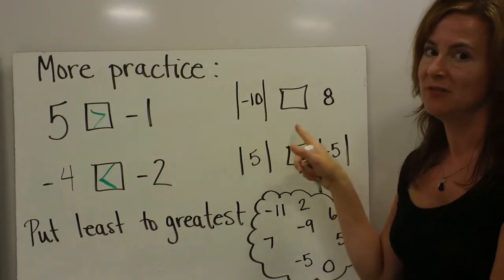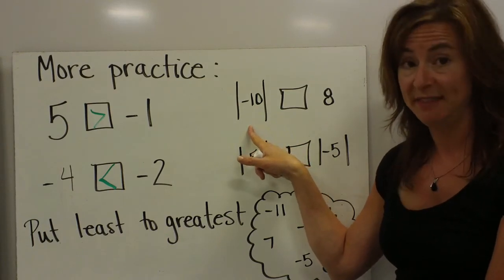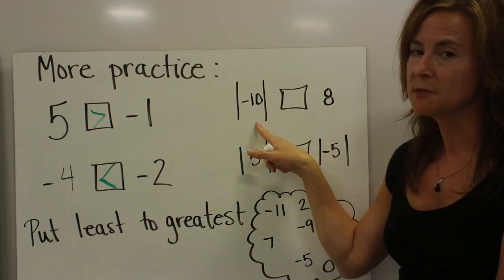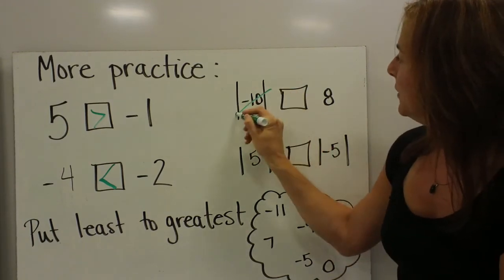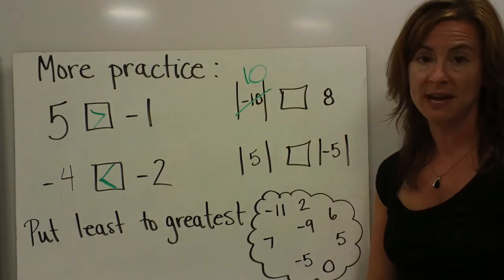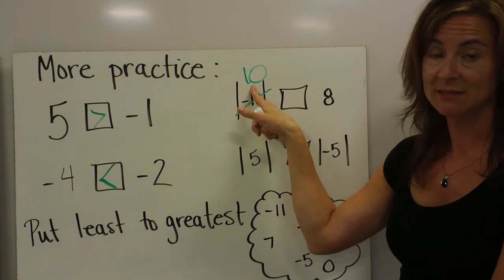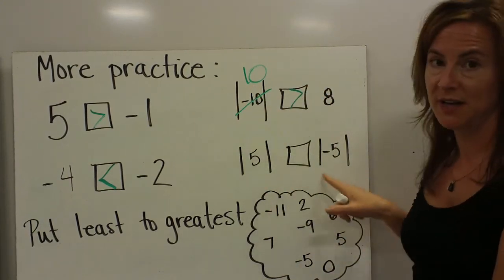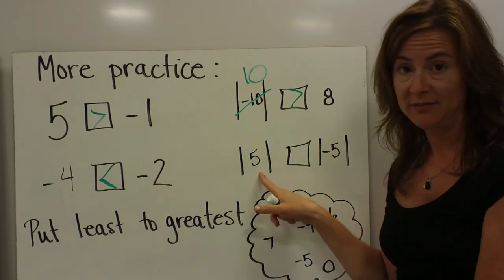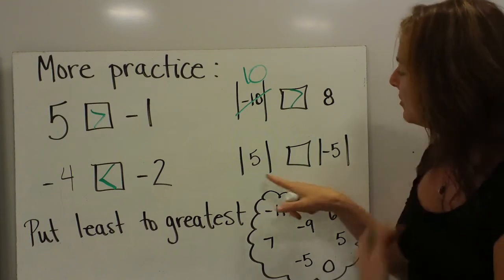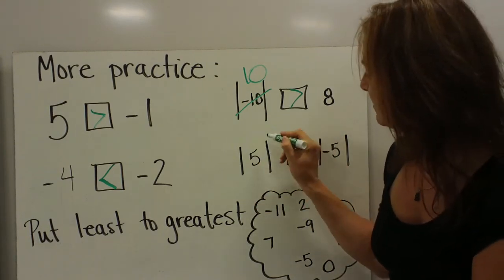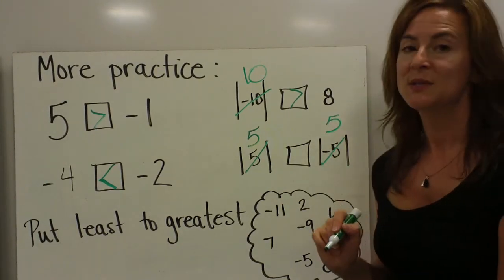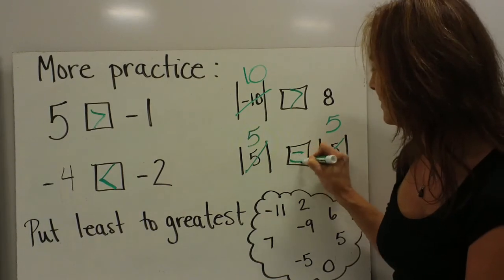Here I have to do some solving: the absolute value of negative 10 compared to 8. First, I solve the absolute value of negative 10, which is simply 10 — the number without the sign. 10 is greater than 8. Here I have two absolute values: the absolute value of 5 and the absolute value of negative 5. Solving both: this would be 5 and this would also be 5. So comparing them, 5 is equal to 5.